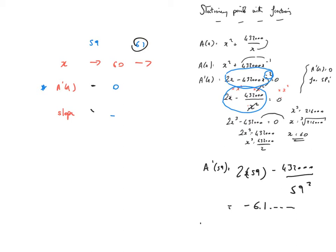Now let's try 61. A dashed 61 will be equal to 2 lots of 61 minus 432,000 over 61 squared. That will give me 5.9 odds. The key thing is that is a positive result. So it goes up the way. I can see that that is a minimum turning point at x equals 60.